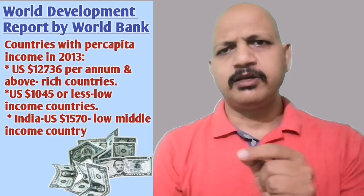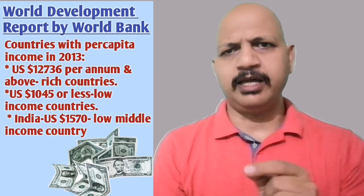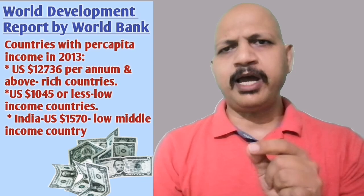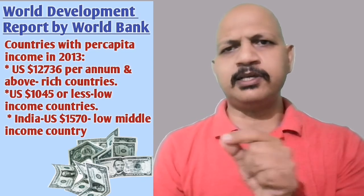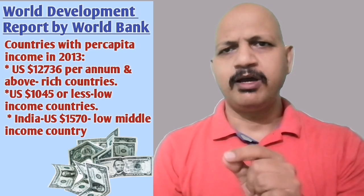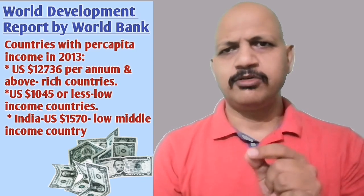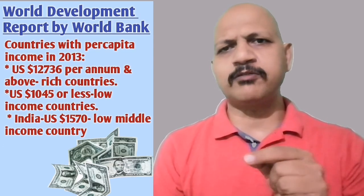This criterion is used by the World Bank to classify countries. The World Bank publishes a report known as World Development Report, and in that report it classifies countries on the basis of per capita income. Countries with per capita income of $12,736 or above as per 2013 data are called rich countries. These rich countries are generally also called developed countries, except some countries of the Middle East.